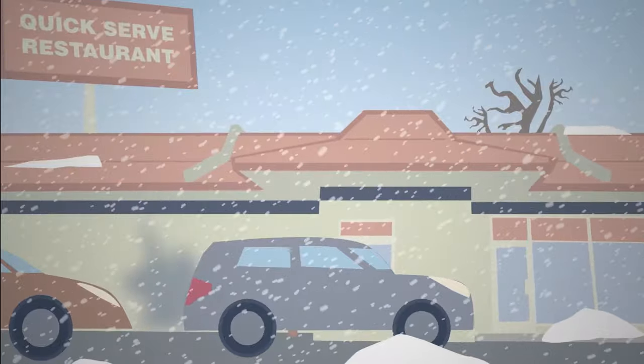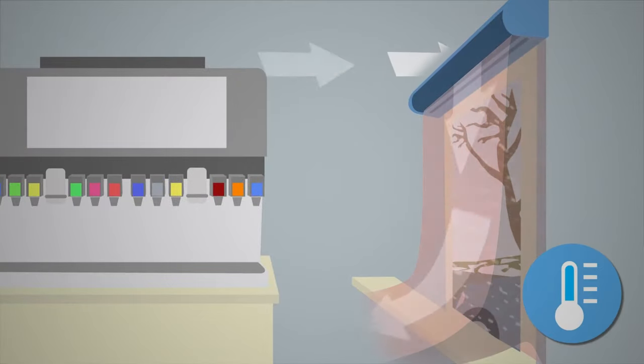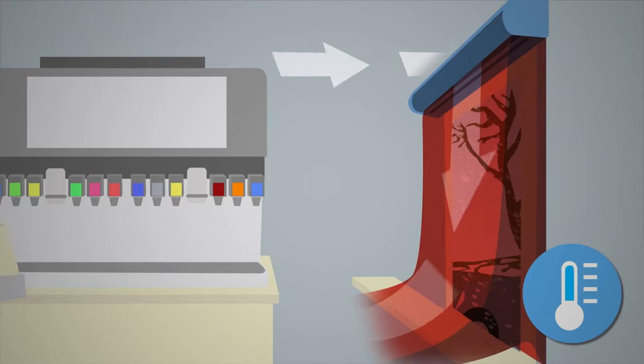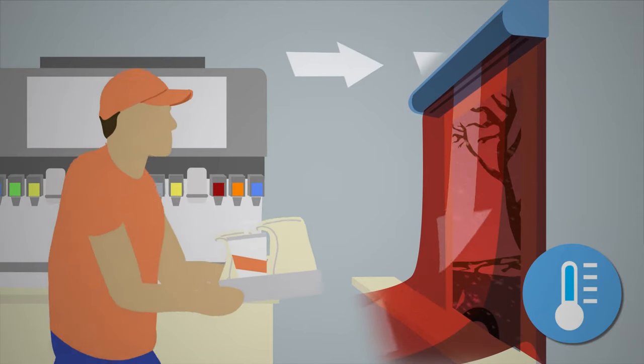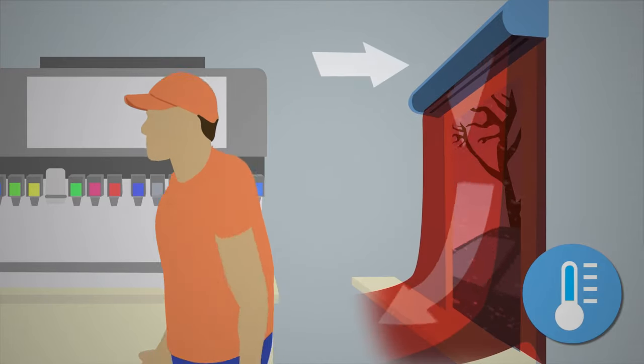In cold weather, the air curtain keeps the employee working the window warm. When it's super cold, if you add electric heat, the air curtain not only protects the employee, but it also keeps equipment such as soda machines from freezing.